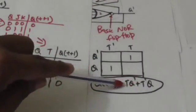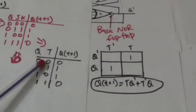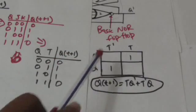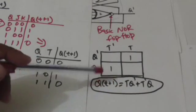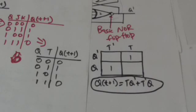This is the characteristic equation of the T flip-flop, which is obtained by getting the minimized boolean function of Q(t+1) in terms of Q and T using a K-map. We can notice from the characteristic equation that the next state of the T flip-flop is an exclusive-OR function of the present state Q and input T.